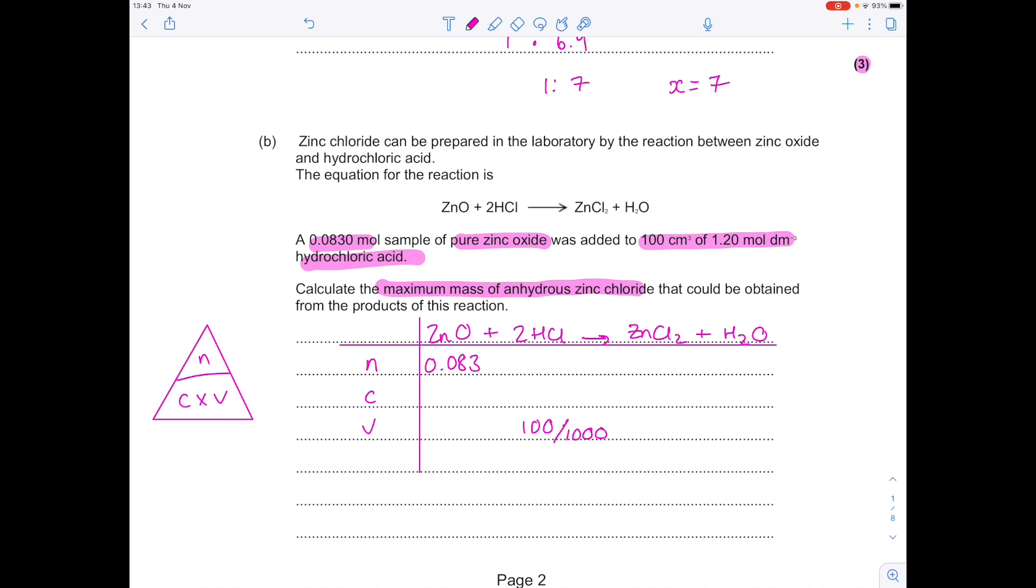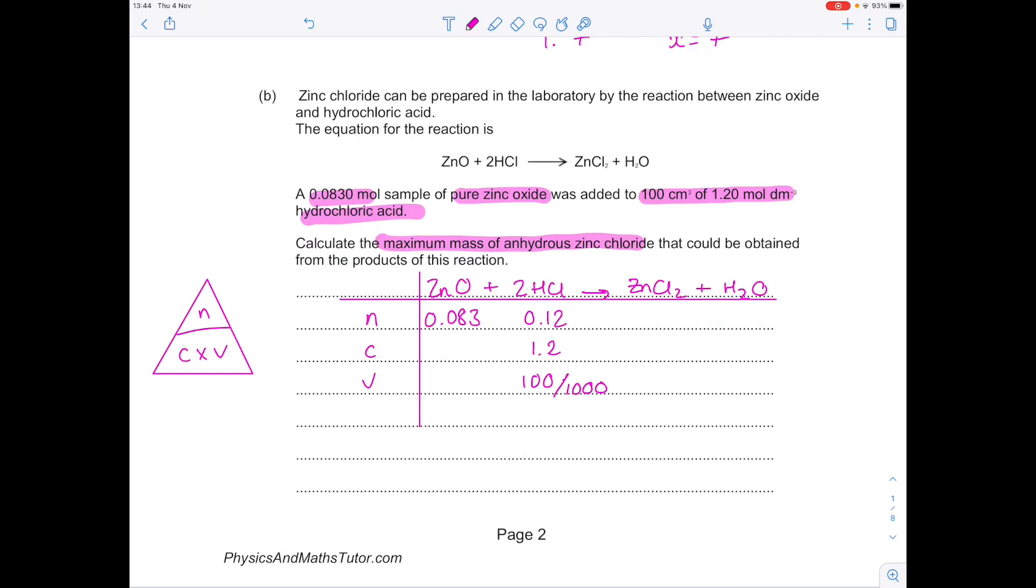Make sure you do the direct conversion here into decimeters cubed. And to do that, you need to divide by 1,000. I always do that in my working. The other thing we've been told is the concentration of hydrochloric acid, which is 1.2. So my next steps are to use this formula triangle to find out the number of moles of hydrochloric acid. So do 1.2 times 100 over 1,000 to get 0.12. Now we need to work out which of those reactants was in excess. In order to do that, I now want to work out what number of moles of zinc oxide I would need to react with all that hydrochloric acid. Because of this mole connection, which is 1 to 2, I need to do number of moles of zinc oxide as being 0.12 divided by 2 to get 0.06.